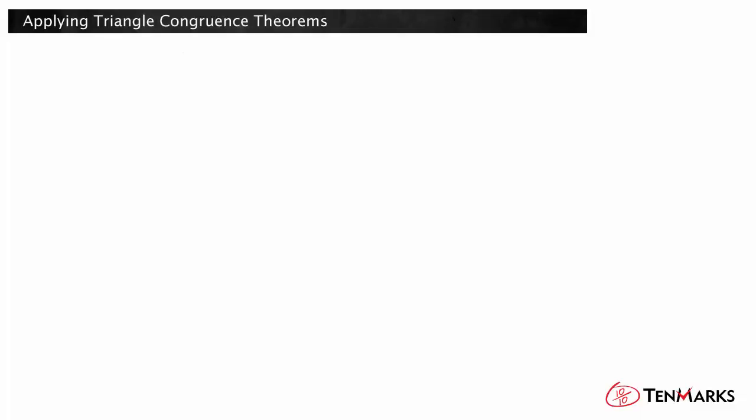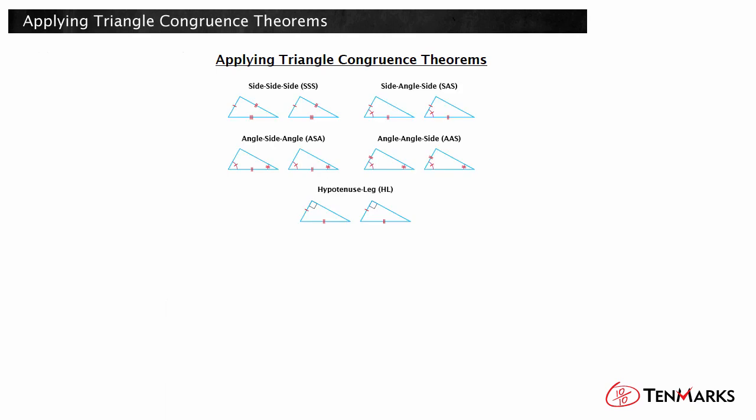In this video, you will learn how to use congruence theorems to prove pairs of triangles are congruent. Recall that there are five congruence theorems that allow us to determine two triangles are congruent without being told they have three pairs of congruent corresponding angles and three pairs of congruent corresponding sides.